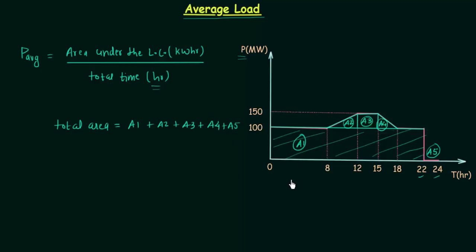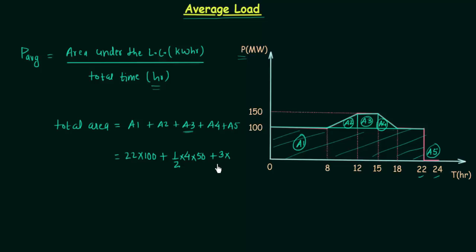Area A1 is a rectangle: 0 to 22 hours is 22, multiplied by 100, giving 2200. Area A2 is a triangle: half base times altitude, where base equals 12 minus 8 which is 4, and altitude equals 150 minus 100 which is 50, giving 100. Area A3 is a rectangle: one side equals 15 minus 12 which is 3 hours, and the other side is 50, giving 150. Area A4 is again half base times altitude: base equals 3 and altitude equals 50, giving 75. Area A5 equals zero times 2, which is 0.